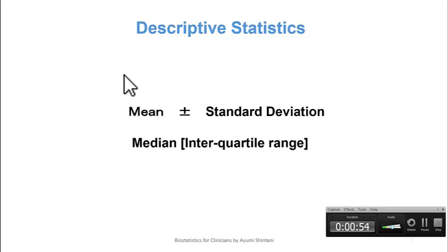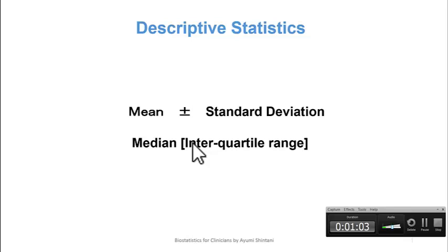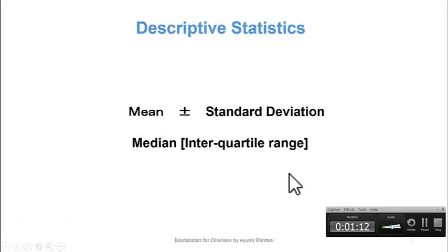In this video, we will talk about descriptive statistics: mean plus-minus standard deviation, and median and interquartile range. Mean and median show the central tendency of data, while standard deviation and interquartile range show the variation of data. So let's start with mean plus-minus standard deviation.